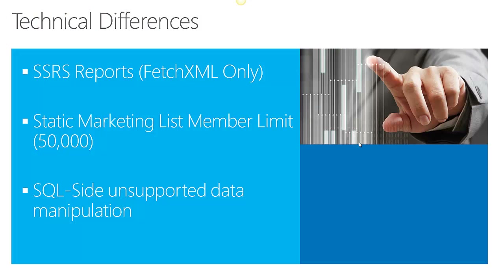Let's talk about some technical differences. When it comes to technical differences, there aren't too many. On the SSRS report or custom report side, CRM Online only supports Fetch XML reports. So there are some limitations when it comes to organizations using SQL-based reports. Fetch XML also has some limitations regarding the amount of records it can process, which limits the member limit within static marketing lists. Dynamic marketing lists don't suffer from this limit. For organizations who try to manipulate the SQL side data directly, there is no such thing since you don't have access to the SQL side — only through the SDK. So SQL side unsupported data manipulation is impossible.